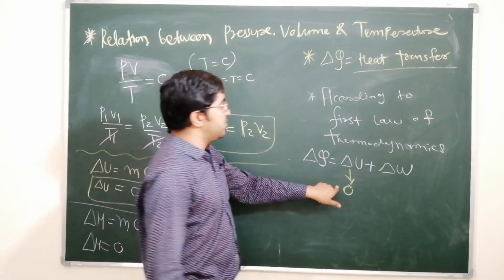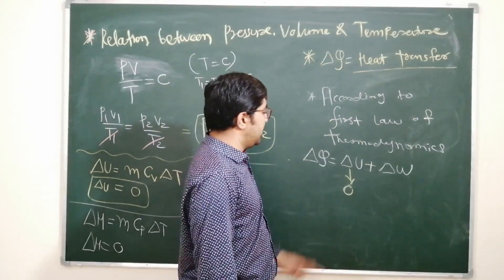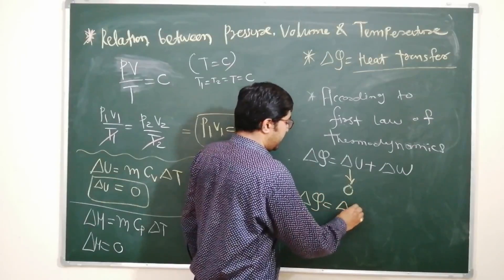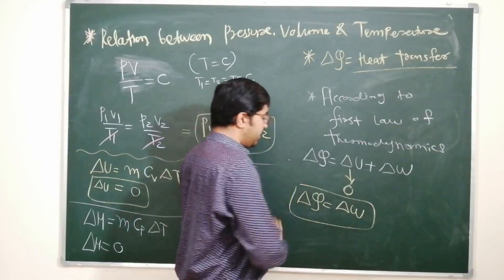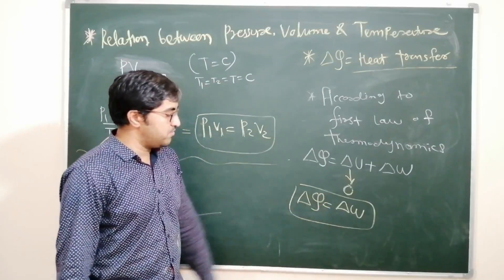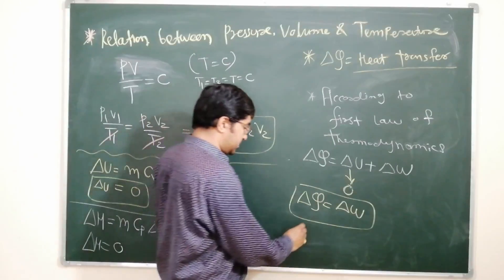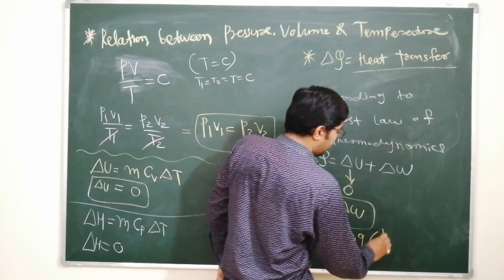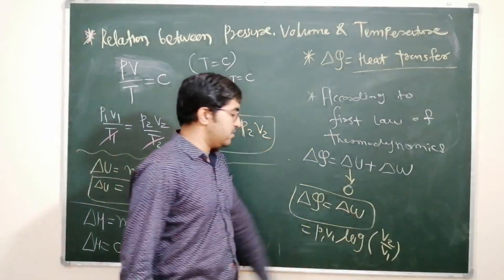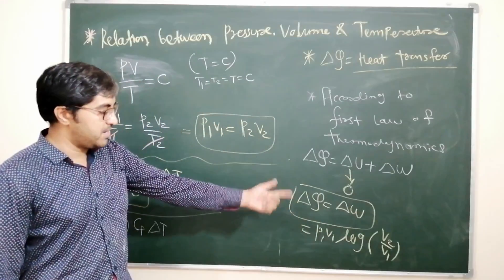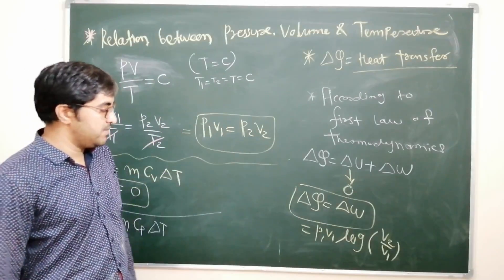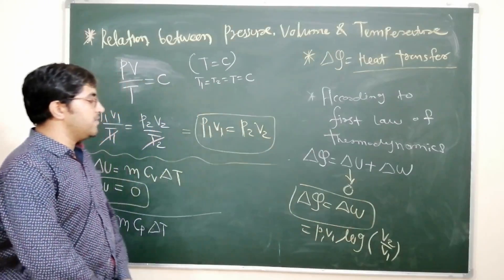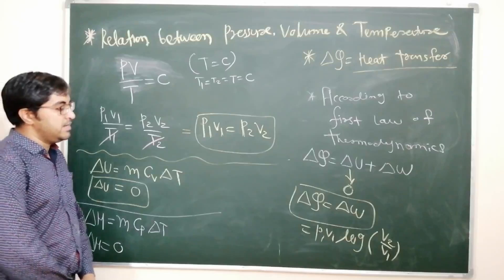From the first law of thermodynamics: ΔQ equals ΔU plus ΔW, where ΔQ is heat transfer, ΔU is internal energy, and ΔW is work done. Since internal energy is zero for the isothermal process, ΔQ equals ΔW. We have already derived that work done equals P1V1 log(V2/V1) or P2V2 log(V2/V1). If volume values are not given, you can convert to pressure terms using the relations derived above.